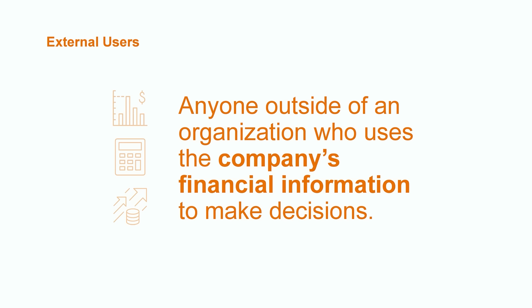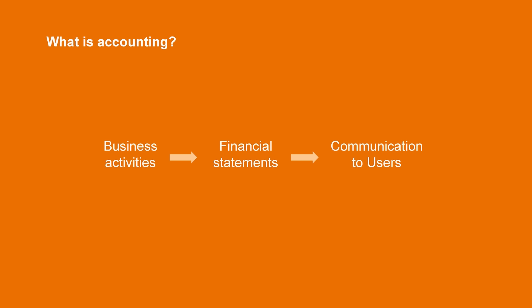Before we narrow in on the categories of external users, let's take one step back and briefly answer the question: what is accounting? Accounting is basically an information system that keeps track of business activities, then processes this information into financial statements, and ultimately communicates the results to the decision makers, also known as the users. The better these users are able to understand the financial information, the better the decisions they can make.